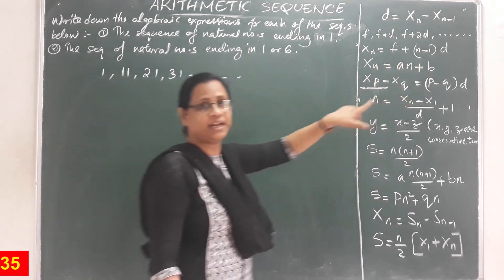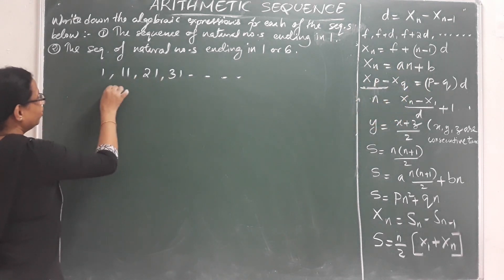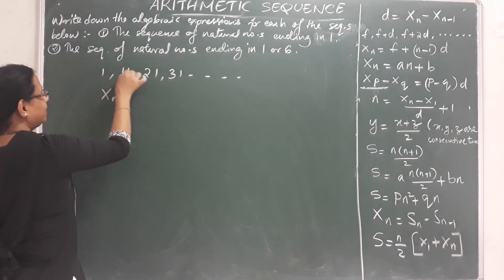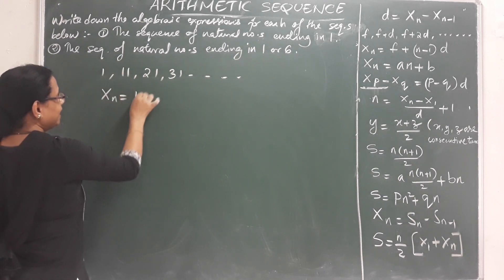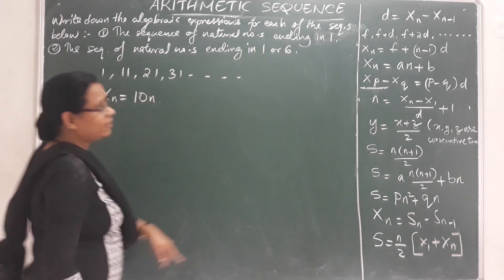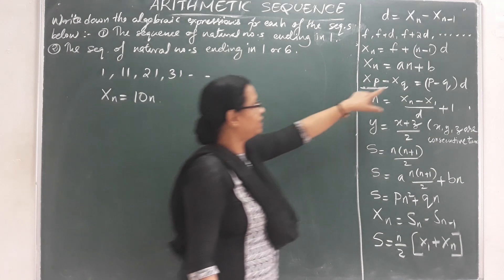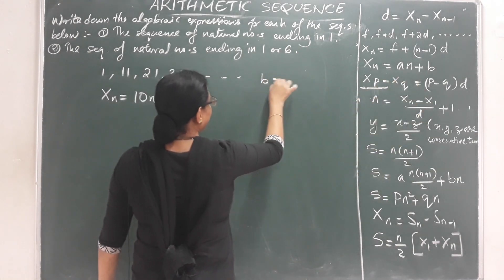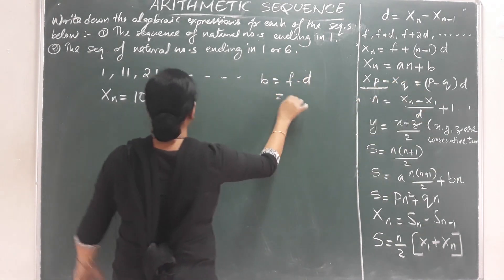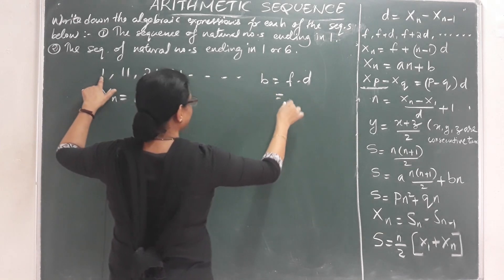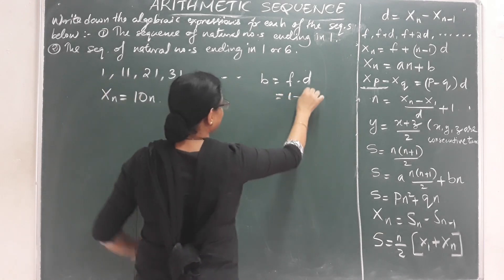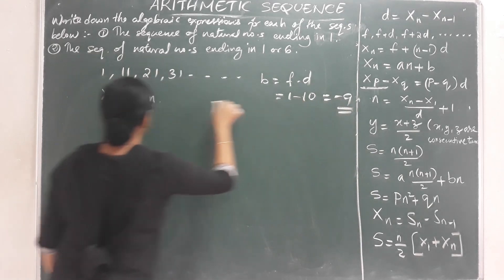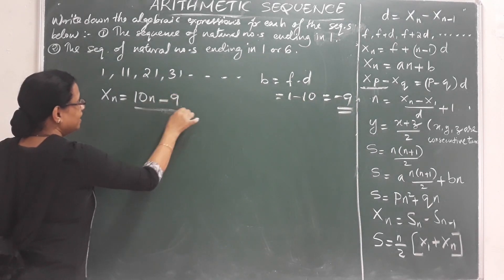The nth term is of the form an plus b. Now, xn is the term, and that is equal to the common difference times n, which is 10n. Then we add the first term minus the common difference: f minus d. That is 1 minus 10, which equals minus 9. So the algebraic expression is 10n minus 9.